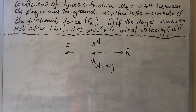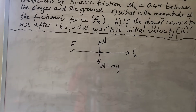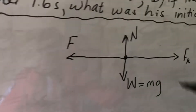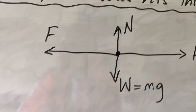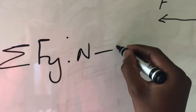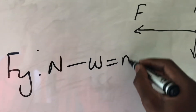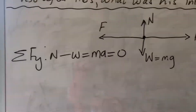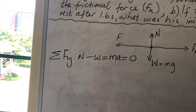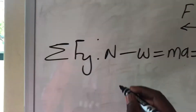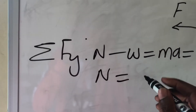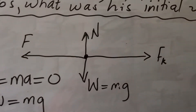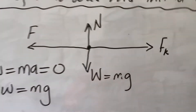Let's resolve all forces. Starting with the y-direction: the normal force N points up (positive) and the weight W points down (negative), so N minus W equals ma. But since the player is not sliding up or down — only horizontally — the vertical acceleration is zero. Therefore N minus W equals zero, which simplifies to N equals W, and since W equals mg, we get N equals mg.